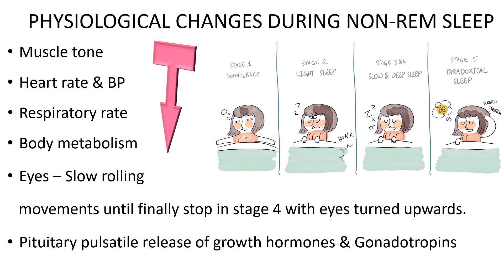Physiological changes during non-REM sleep: muscle tone decreases progressively; heart rate and blood pressure decrease; respiratory rate decreases. The eyes begin slow rolling movements until they finally stop in stage four, deep sleep, with eyes turned upward. Body metabolism is lower. There is pulsatile release of growth hormone and gonadotropin from the pituitary.